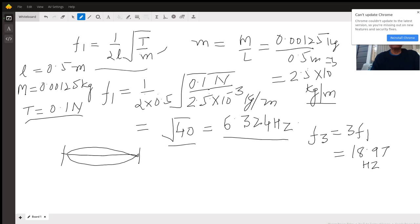And if I look at the second harmonic, that will be twice of 6.324, and if we look at the third harmonic, that will be 3 times 6.324 hertz, which is 18.97 hertz. So the frequency of the third harmonic is 18.97 hertz or per second.